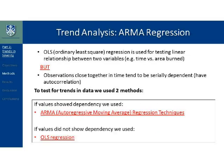For our statistical analysis, we wanted to determine if there was a relationship between our independent variable — time — and our dependent variables — area burned, area burned severely, and percent high severity. We would normally use an ordinary least squares regression, but our data is a time series where observations can be dependent. So if values showed temporal dependency, we used ARMA — autoregressive moving average technique — to account for this. If values didn't show dependency, we used OLS regression.